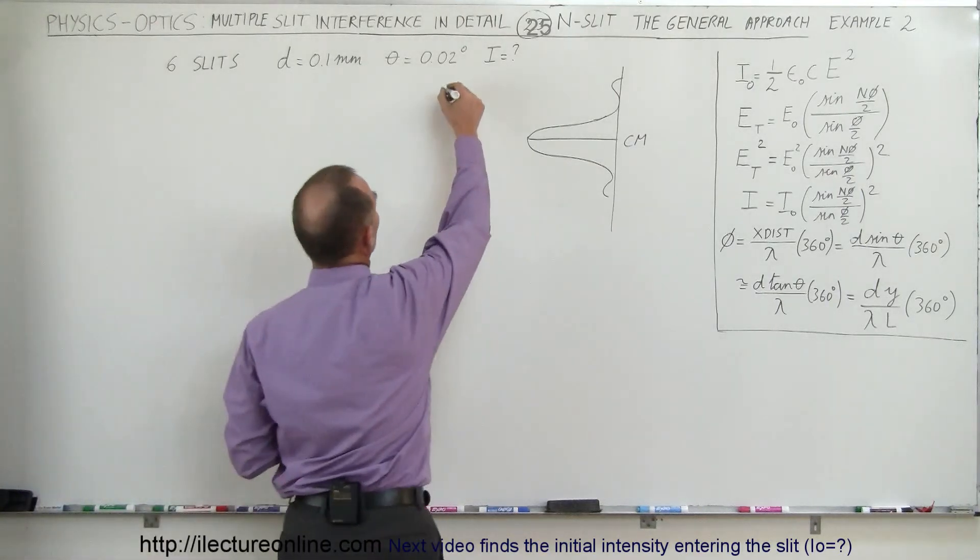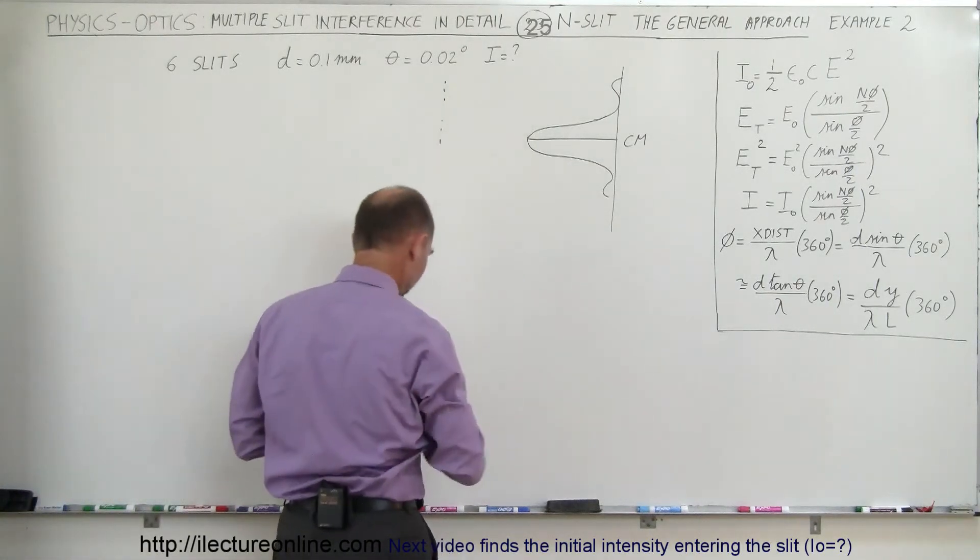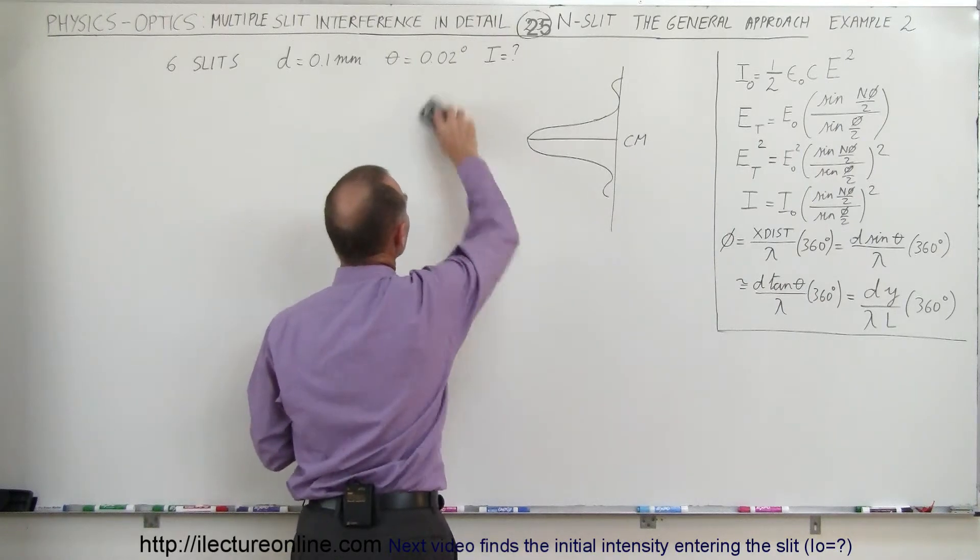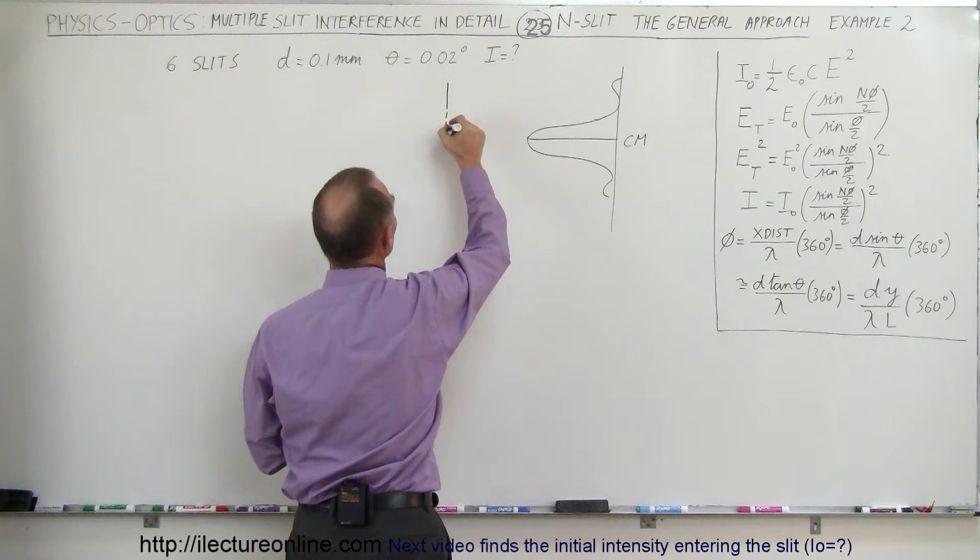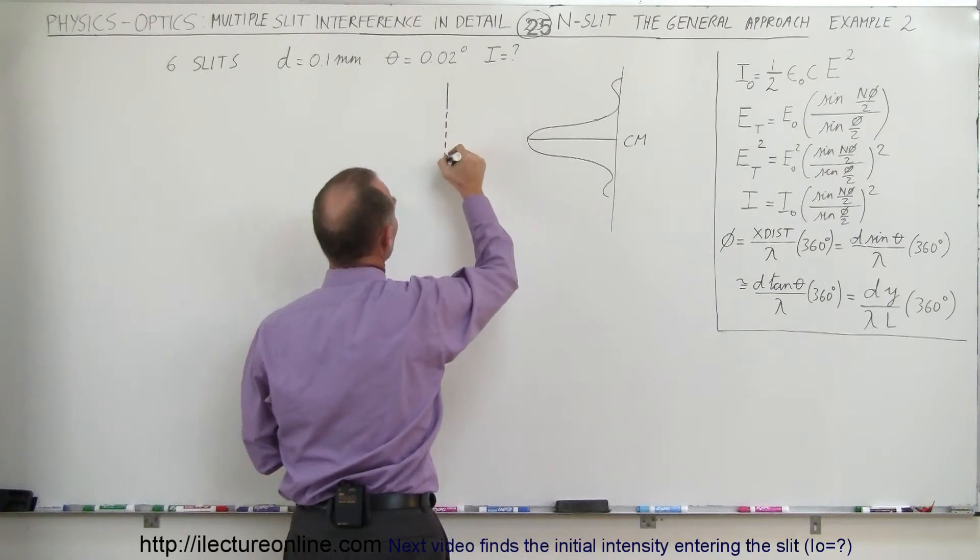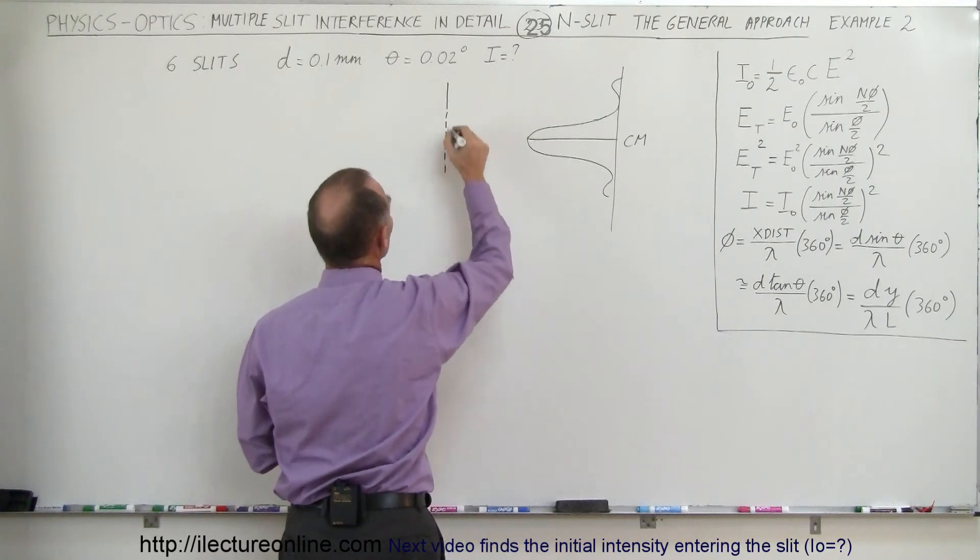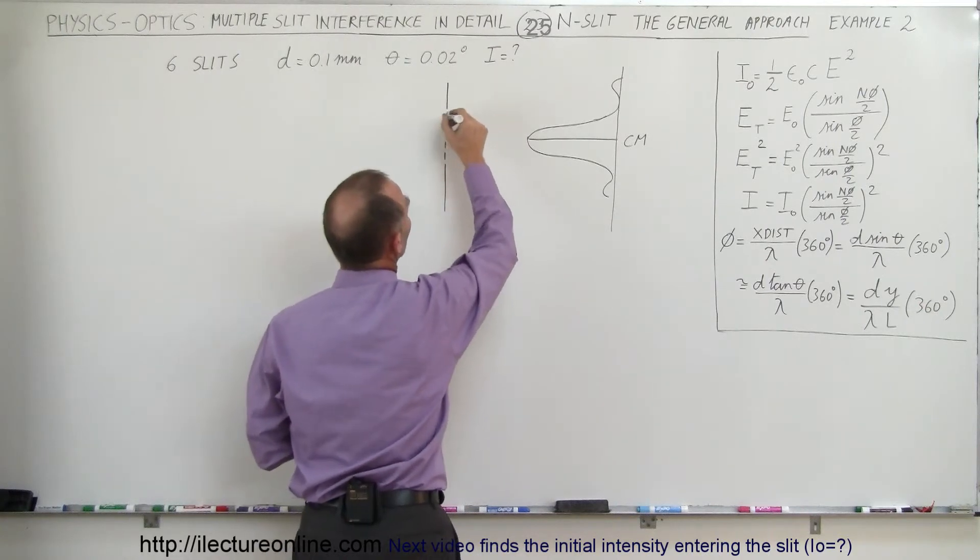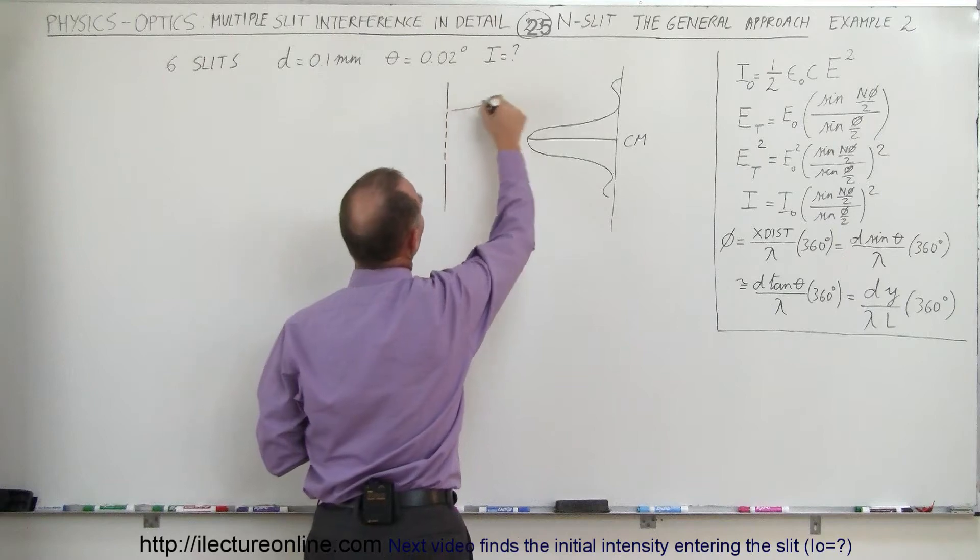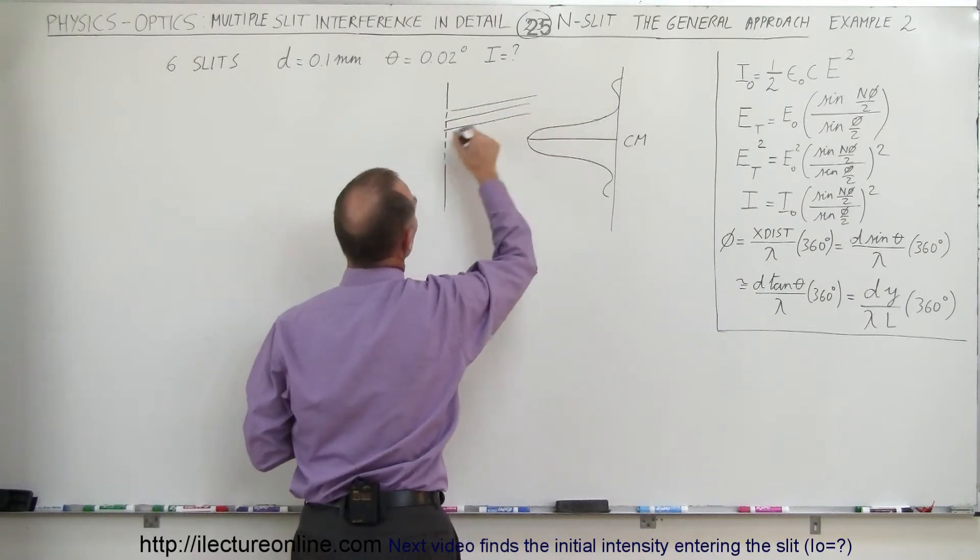So again, we're going to have some sort of... that's too many slits. Let me redo that. Okay, so we have a situation where we have one, two, three, four, five, six slits like that. So one, two, three, four, five, six. Yep, there we go. And the position on there would be at an angle of 0.02 degrees.